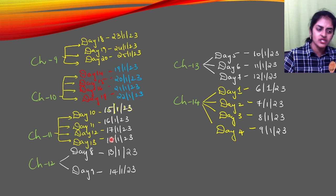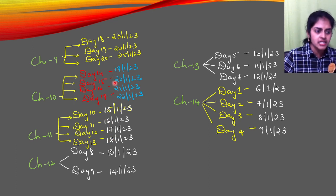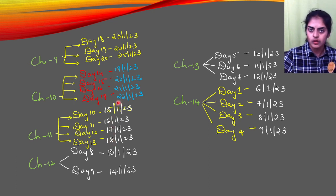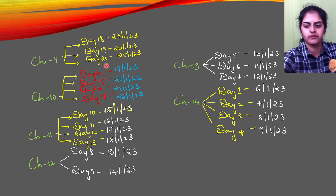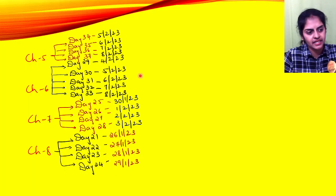Chapter 10 also gets four days — from 18th January — because many of you have requested help with it. After trigonometry on 18th, from 19th to 22nd you will do Chapter 10 — Mensuration. Chapter 9 gets three days, from 23rd to 25th. Then Chapter 8 — Similar Triangles, which is a headache for most of you — gets four days, from 26th to 29th January.